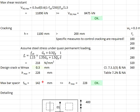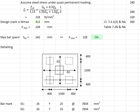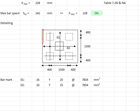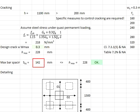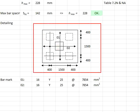Now determine the actual spacing of the reinforcement bars, estimated from the width of the pile caps minus the cover on both sides, then determining the spacing between 16 units of 25 mm rebar. Based on the calculations, the spacing is equal to 142 mm, which is less than the maximum spacing of 228 mm. Therefore crack width is effectively controlled.